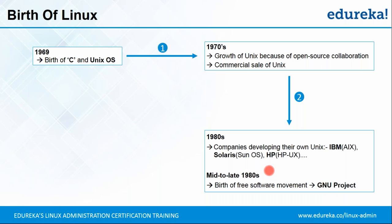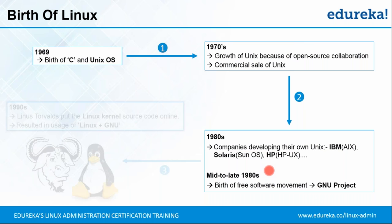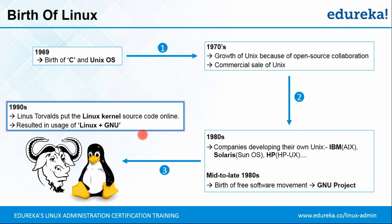In the 1990s — probably 1991 or 1992 — Linus Torvalds, who was still in college at the time, put the Linux kernel source code online. He was trying to use it with hardware called the 386 and thought it was compatible only with that hardware, so he put the source code online for anyone to use. Later they found out it could be used with GNU, and that's when the whole thing gained popularity — the combination of the Linux kernel plus the GNU operating system working together. That's how Linux was born.